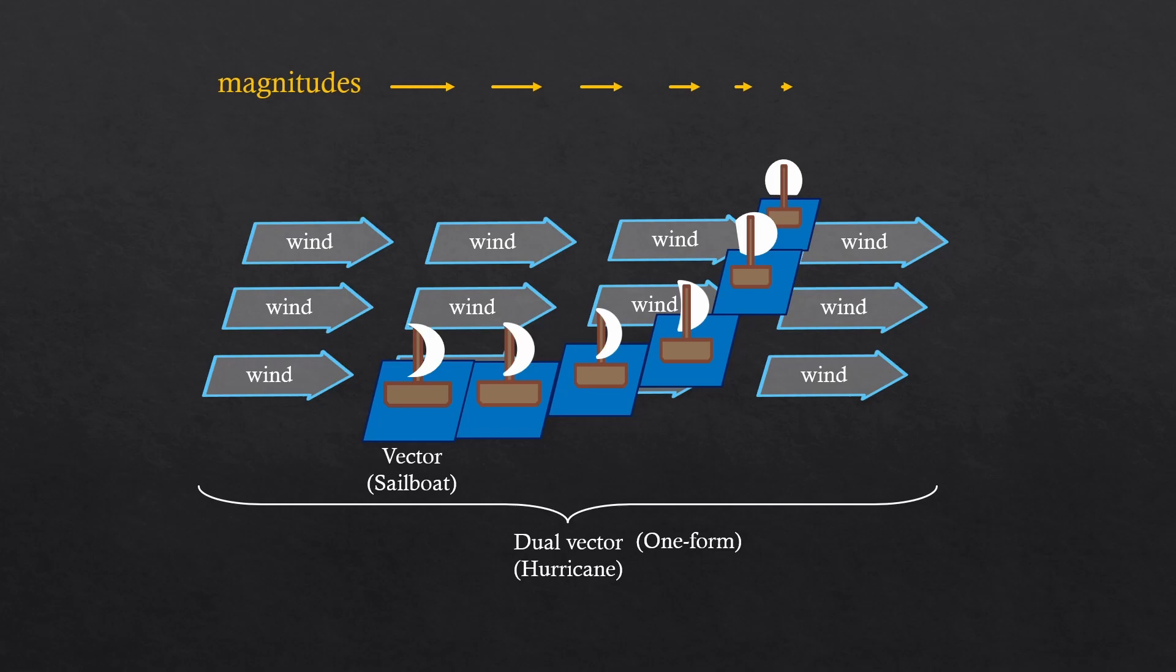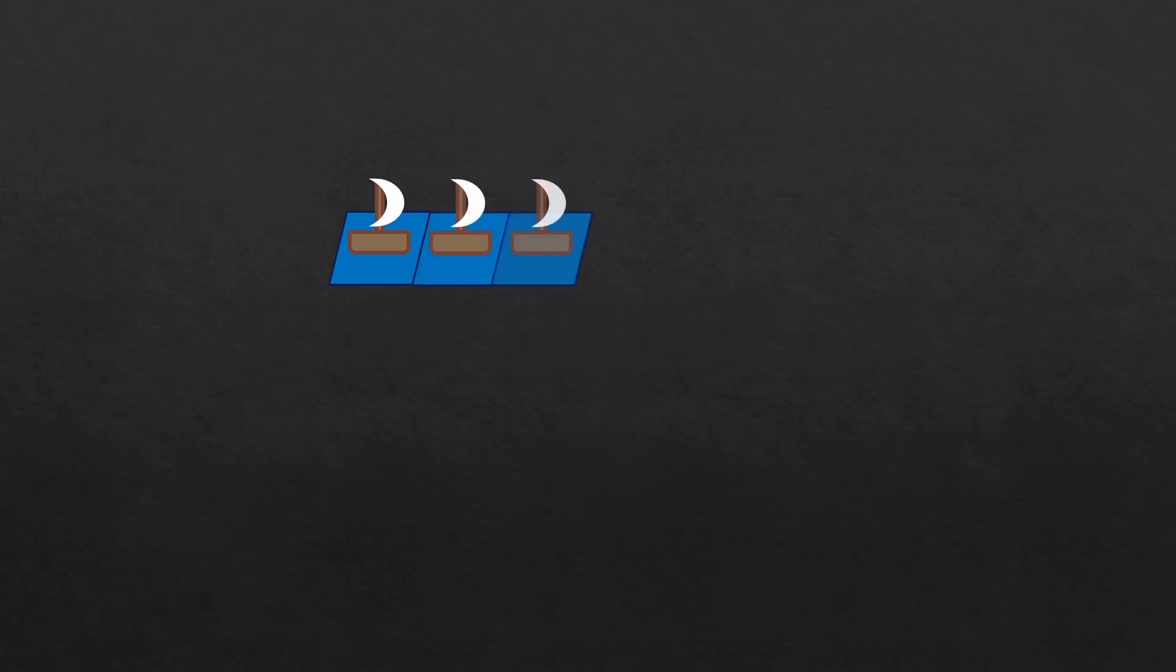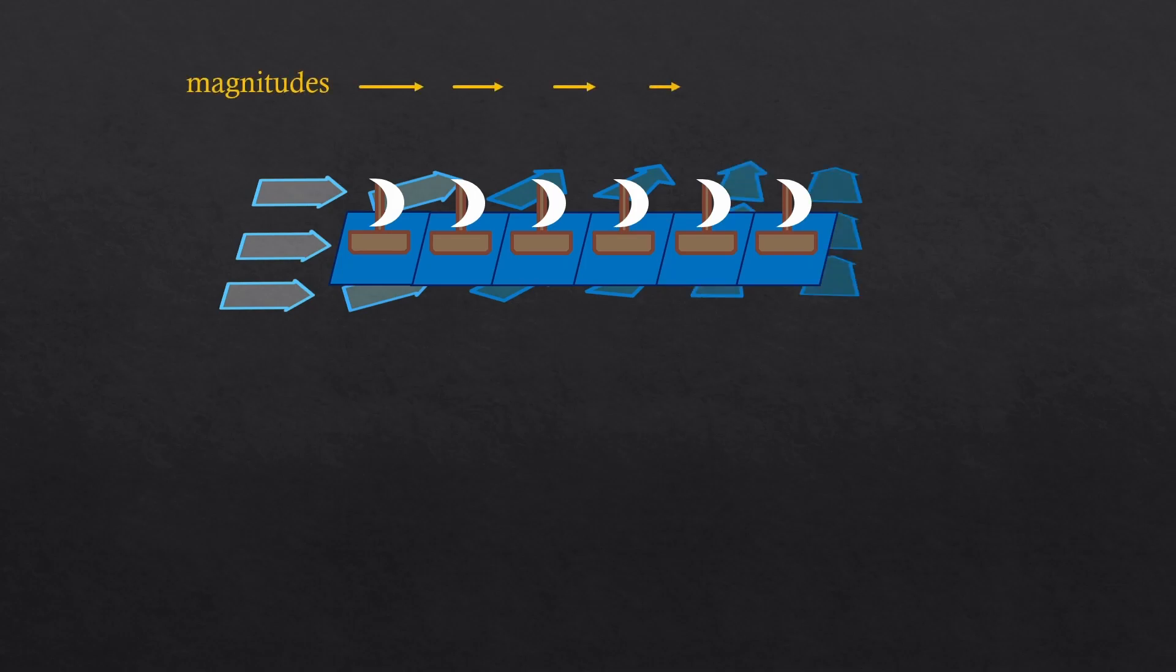Now, here comes the real question. Is this the only way to have the energy change gradually in this way? What if our boat was just sailing forward, and it was just the wind that was changing its direction? The energy could decrease in the exact same way, no?